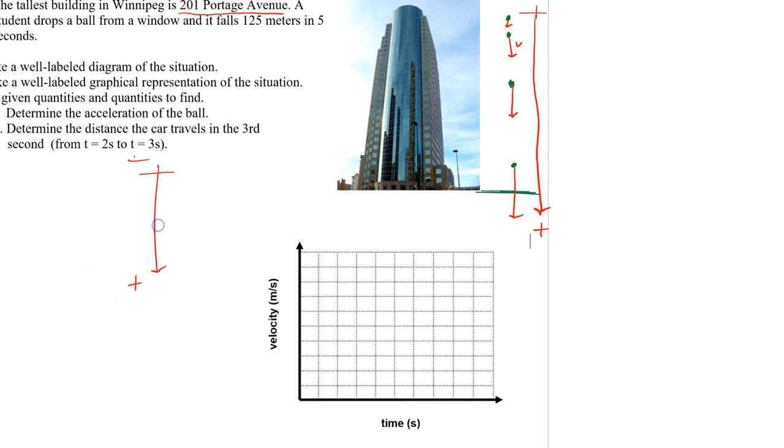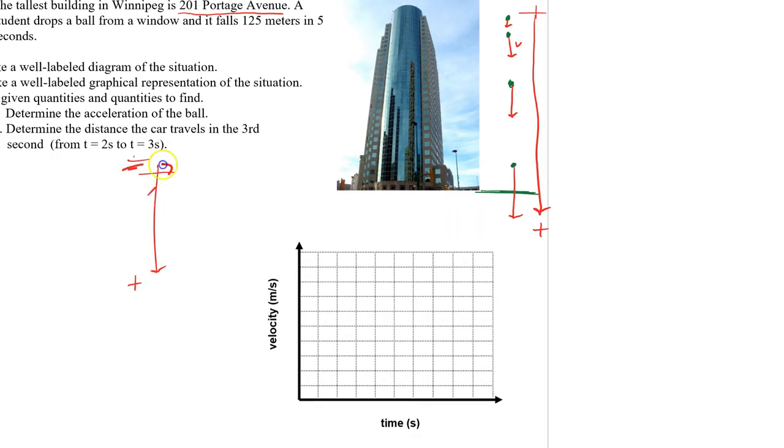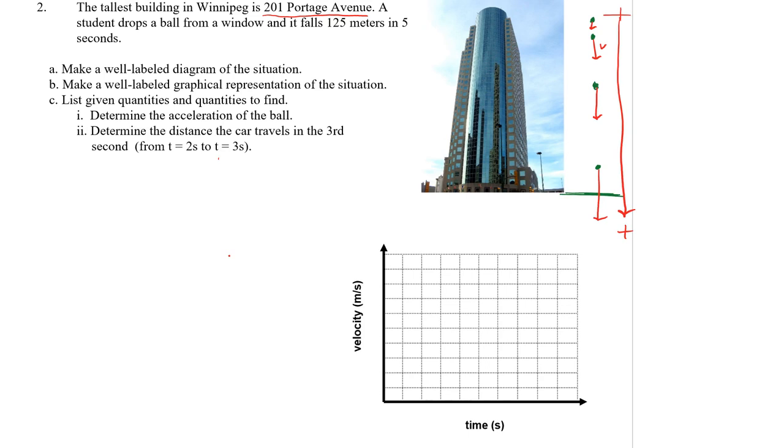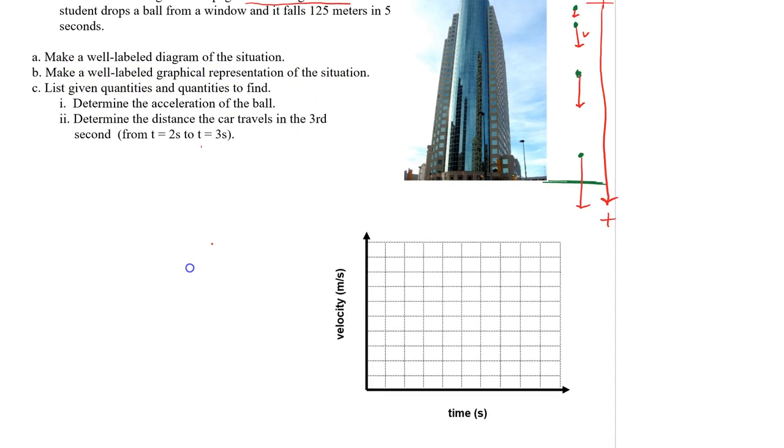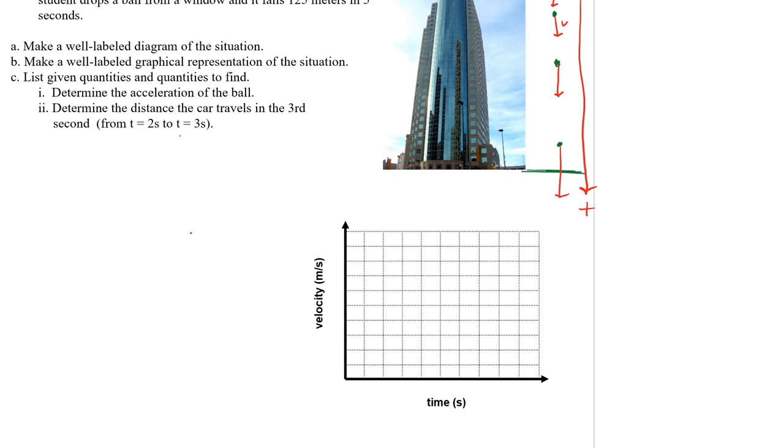Now it says, make a well-labeled graphical representation of the situation. Okay, so this will start with a zero velocity and it's increasing in the positive direction. I'll just kind of go like that.